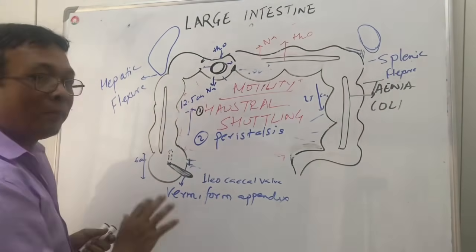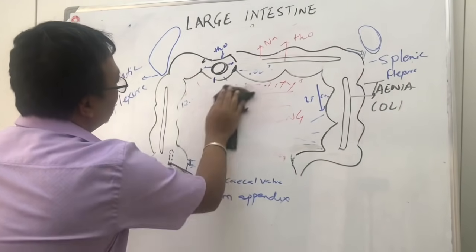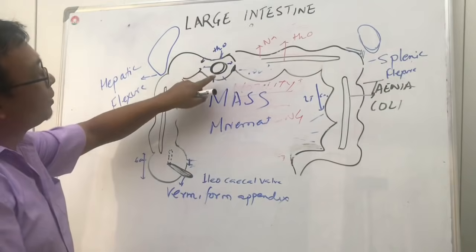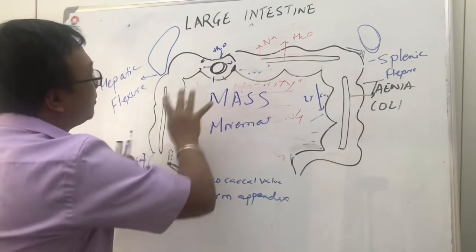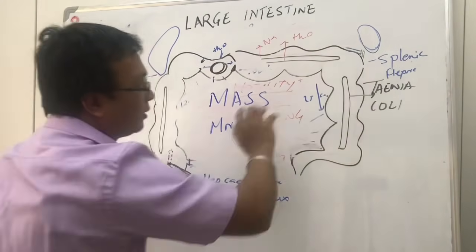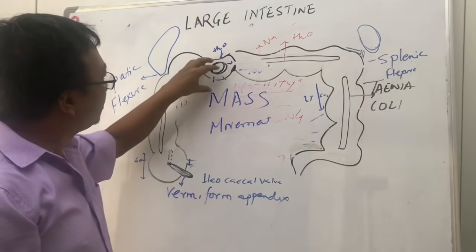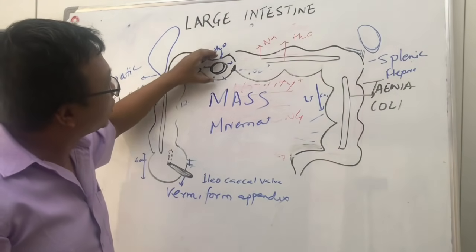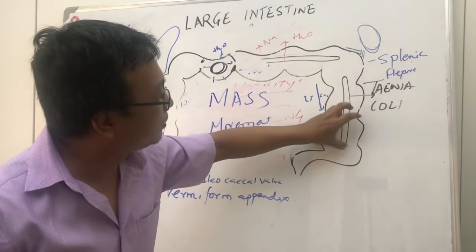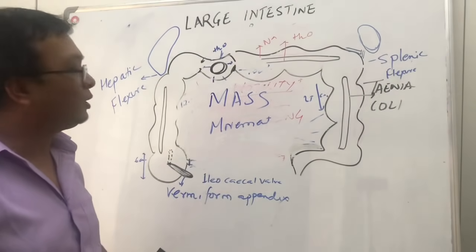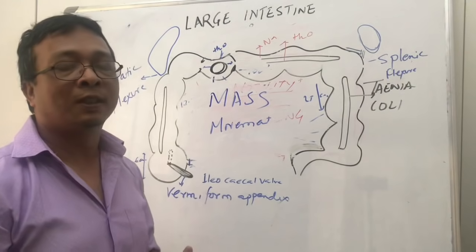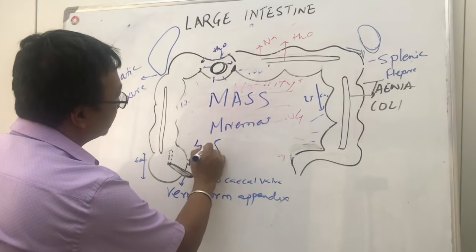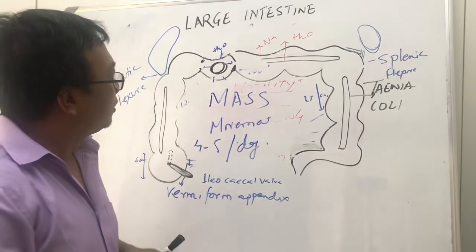The third and most important type of motility is mass movement. Mass movement is the propulsion of all the food materials from one side to the other — there is no shuttling. It is important to note that mass movement is only present in the transverse colon and descending colon, not in the ascending colon or cecum. During mass movement, the colon completely empties itself and dumps fecal material into the sigmoid colon. It happens only about four to five times per day.